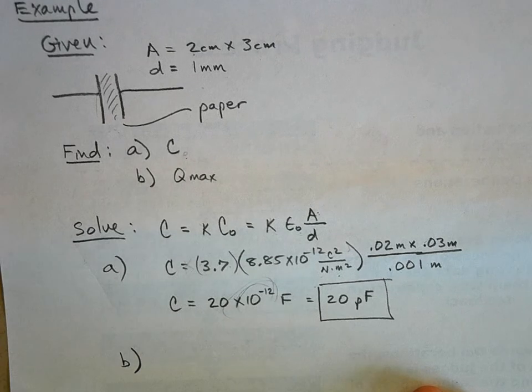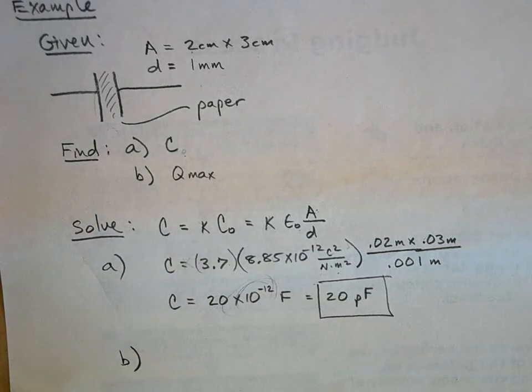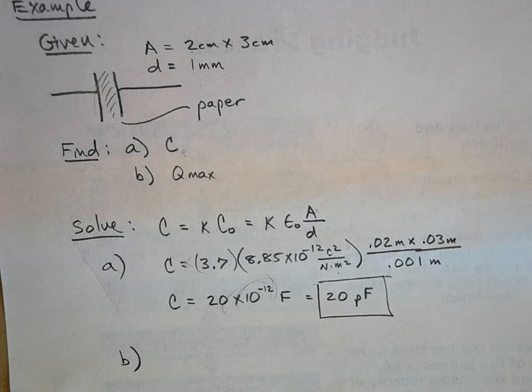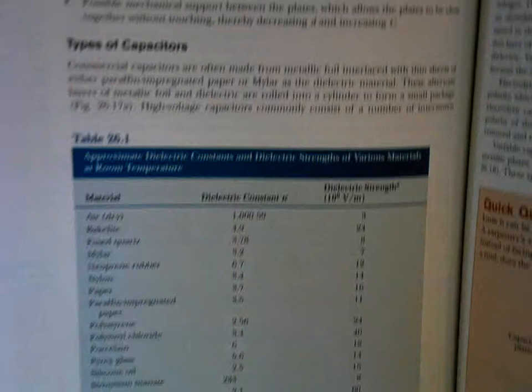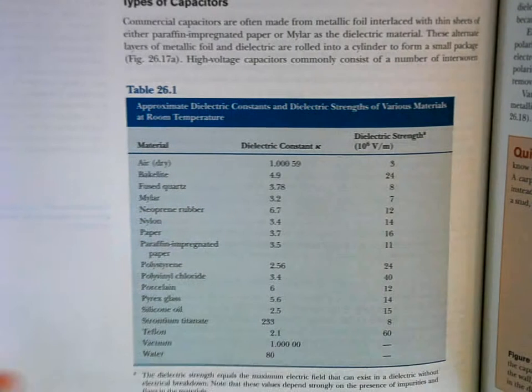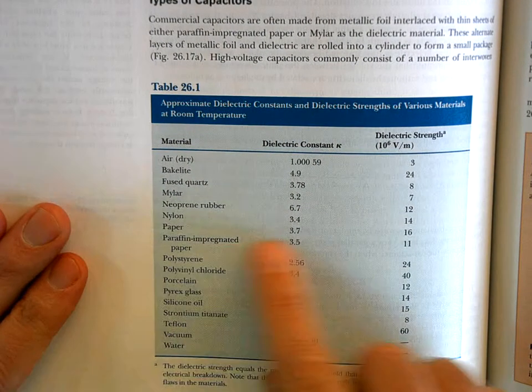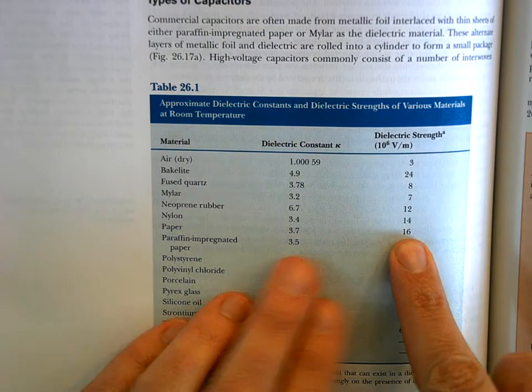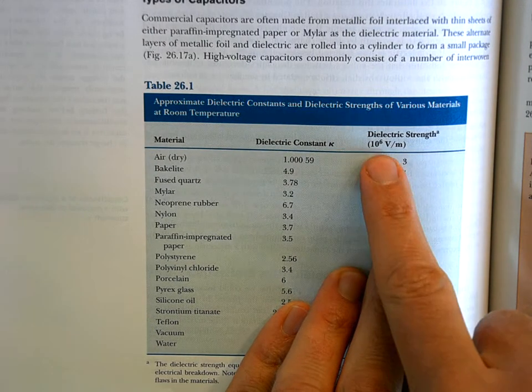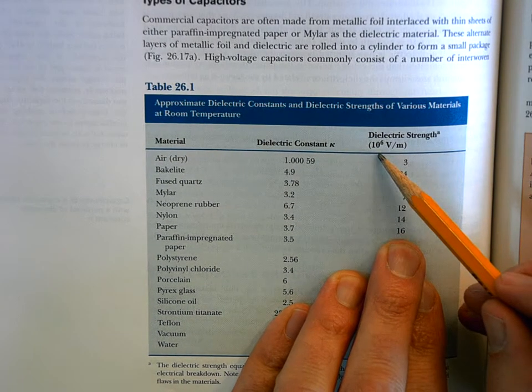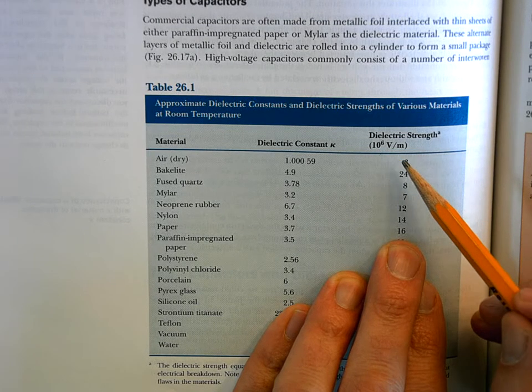Paper has a certain quality of helping to prevent electricity from sparking across. And it's called the dielectric strength. And here it is in our table. And we look it up and we say, okay, for paper, you can get 16 times 10 to the 6, times 10 to the 6 volts per meter.